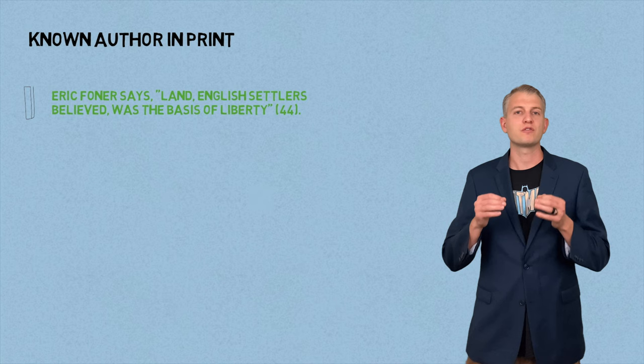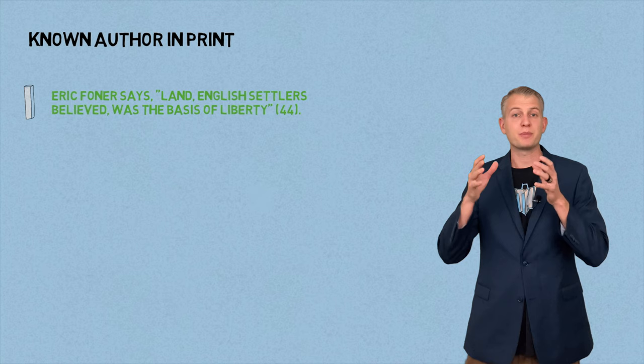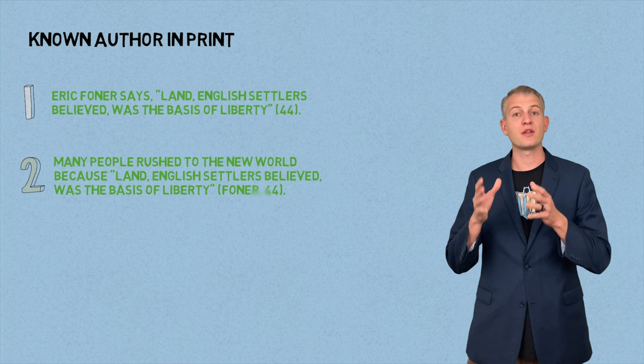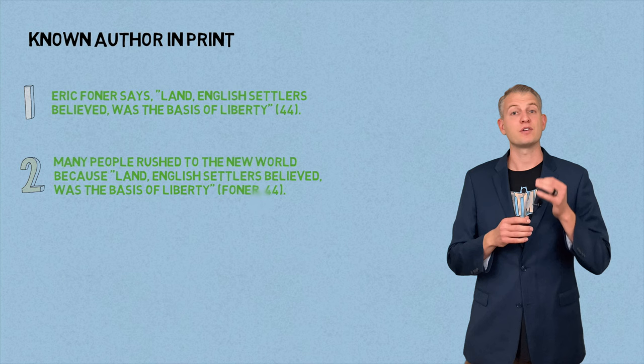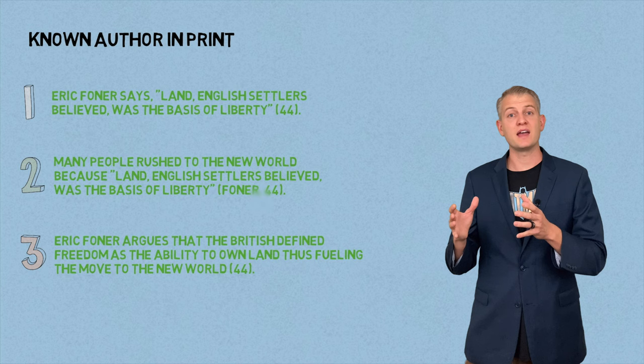If you know the author for a print source, here are three ways to cite it in MLA format. First, for a direct quote, you can state the author's name and then have the quote, ending with the page number in parentheses. The second option is also for a direct quote — place the author's name at the very end in parentheses with the page number, but still introduce the quote. For the third option, take the quote and put it in your own words, state the author's name, and place the page number in the parenthetical citation at the end.